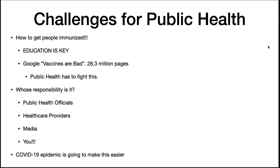Vaccines are a challenge for public health — you need to get about 90 to 95% of the population vaccinated to eliminate a disease in a group. Education about getting vaccines is key. If you Google 'vaccines are bad,' you get 28.3 million pages on the internet, and while the internet gives you information at your fingertips, it also gives you a lot of wrong information.